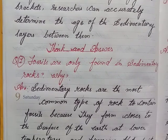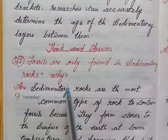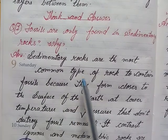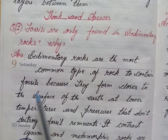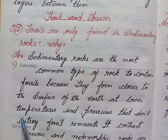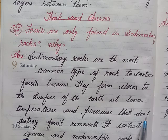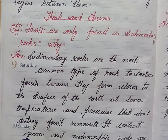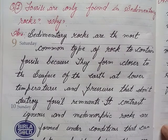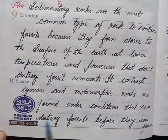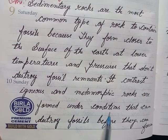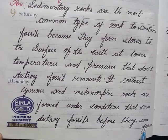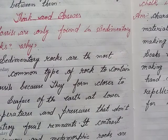Think and answer, first question: fossils are only found in sedimentary rocks. Answer: sedimentary rocks are the most common type of rocks to contain fossils because they form closer to the surface of the earth at lower temperatures and pressures that don't destroy fossil remnants. In contrast, igneous and metamorphic rocks are formed under conditions that can destroy fossils before they can form.